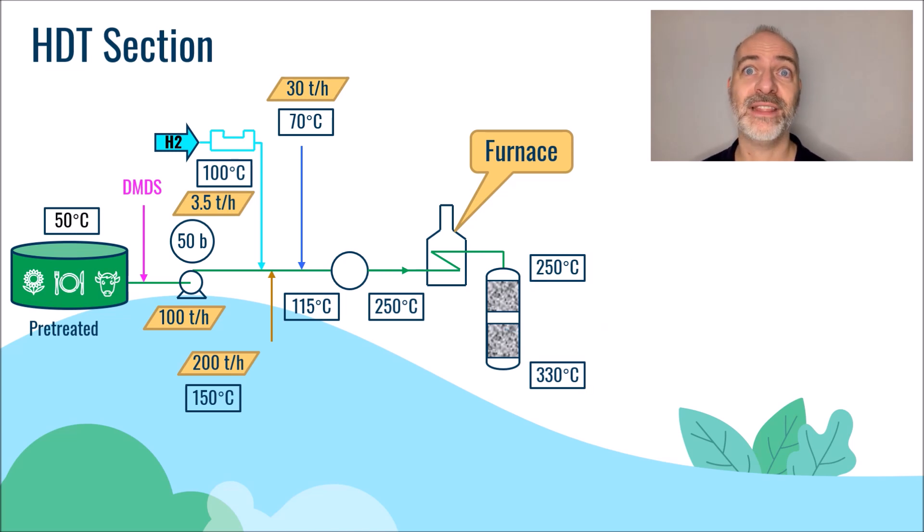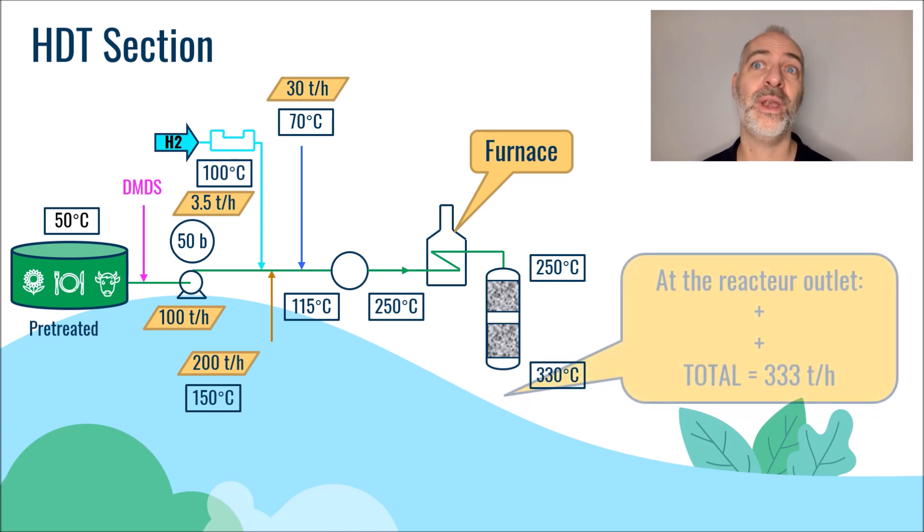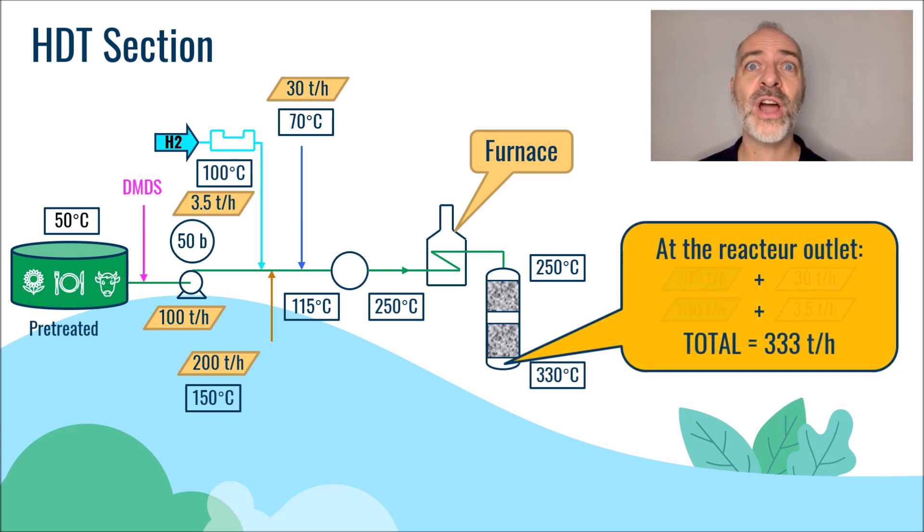For memory, at the reactor outlet, we always have our 333 tons per hour, namely the 200 tons per hour of inerts that are unchanged and the 30 tons per hour of gas are still there.